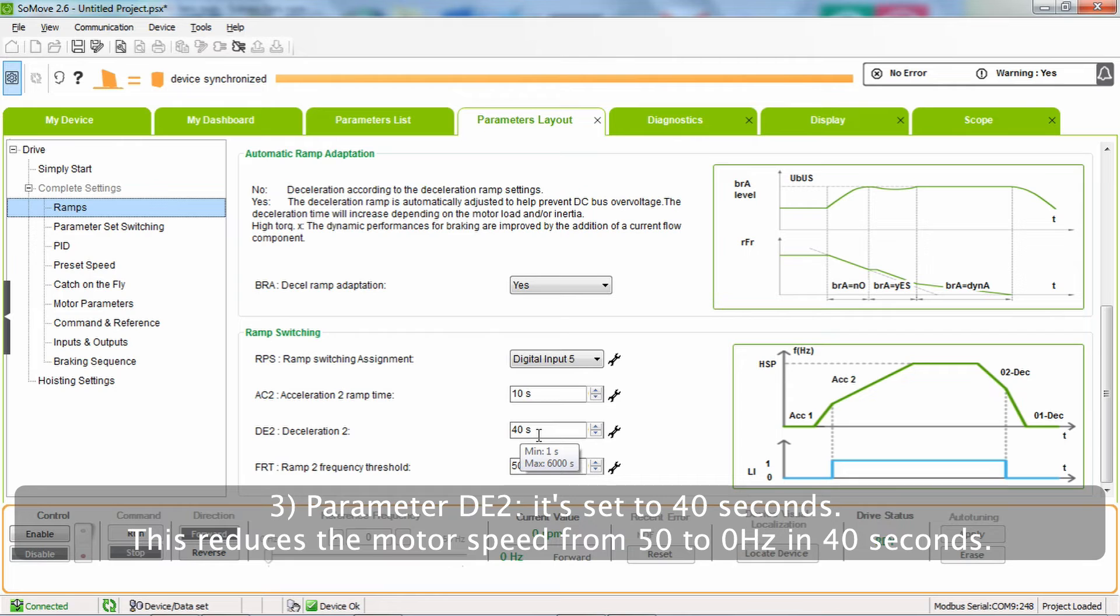Number 3: Parameter DE2. It's set to 40 seconds. This reduces the motor speed from 50 to zero hertz in 40 seconds.